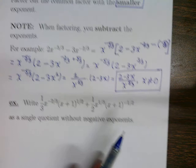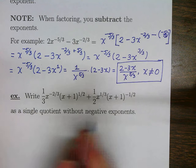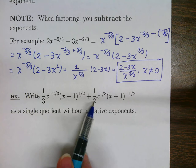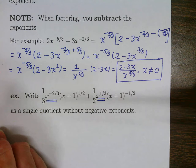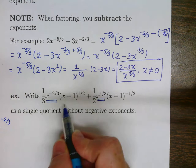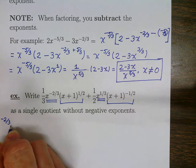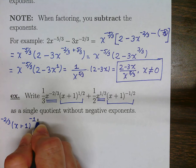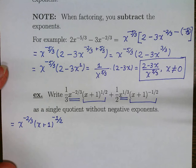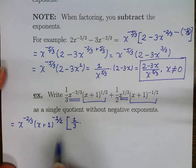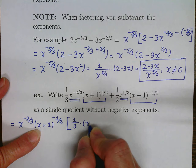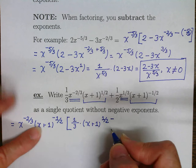Let's look at one more example. What can we factor out? What is the greatest common factor? Well, 1 third and 1 half have nothing in common. We have x to the negative 2 thirds and x to the 1 third — we factor out the smallest power, which is x to the negative 2 thirds. And for x to the 1 half and x to the negative 1 half, we take out the smallest power, which is x to the negative 1 half. In the first term, I still have my fraction 1 third. I have removed x to the negative 2 thirds, but I have x plus 1. I started with exponent 1 half and factored out negative 1 half, so I subtract that exponent.